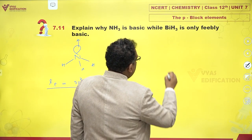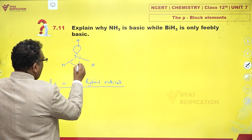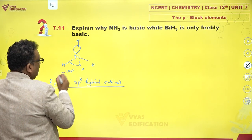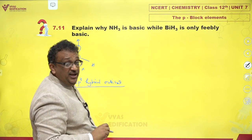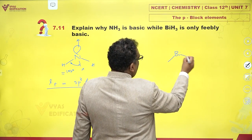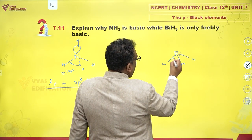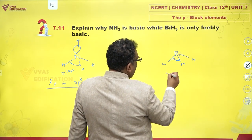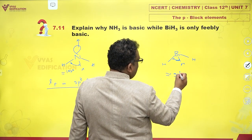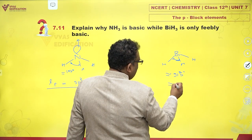If you compare bismuthine — and please note, in ammonia this bond angle is around 107 degrees — in bismuthine (BiH₃), this bond angle is around 91.5 degrees, which is close to 90 degrees.